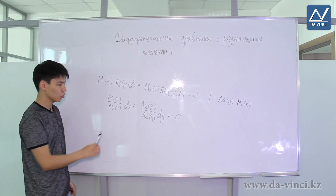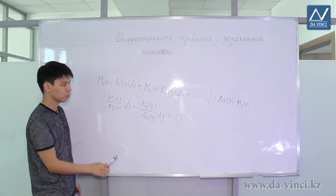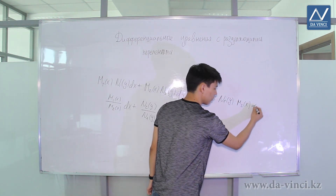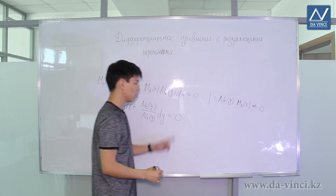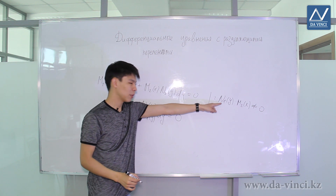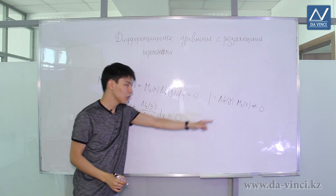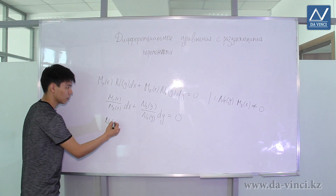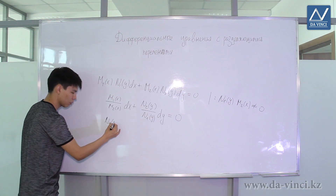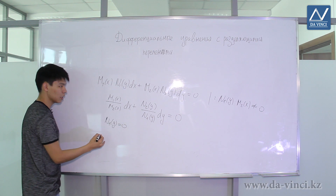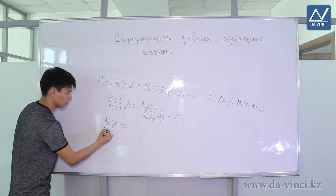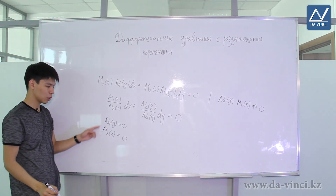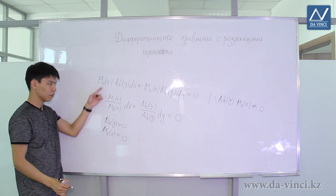Just take the integral. One important thing to note: we can only divide by something that is not equal to zero. So when we divide, we assume these functions are nonzero. But we must separately consider the case when N₁(y) equals zero, and the case when M₂(x) equals zero, as some additional solutions of the original equation may be obtained from there.